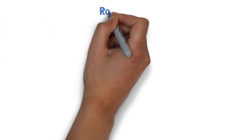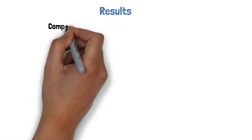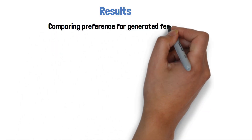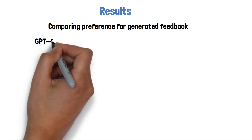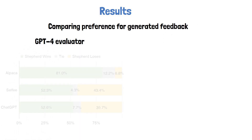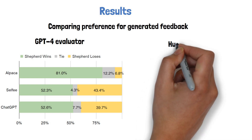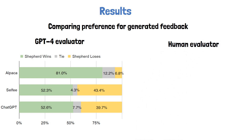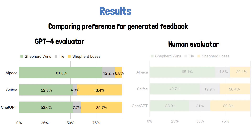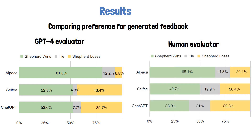So how does the new SHEPHERD model perform? Looking at results comparing preference for generated feedback, using GPT-4 as the evaluator, each tested model creates a feedback and GPT-4 decides which is better. SHEPHERD clearly outperforms ALPACA and is slightly better than Selfie and ChatGPT, where Selfie is a model fine-tuned to refine its own outputs. In human preference evaluation, SHEPHERD still outperforms ALPACA, though by a smaller margin, and is comparable with Selfie and ChatGPT.